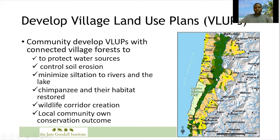This map shows the output of community engagement whereby several villages in the lake zone near Gombe National Park were involved in planning village land use plans. Every village planned their land and allocated village forest reserves adjacent and connected to nearby reserves, achieving connectivity of village forest reserves all the way from Burundi down to Gombe National Park and beyond — a great achievement of the Tacare approach.